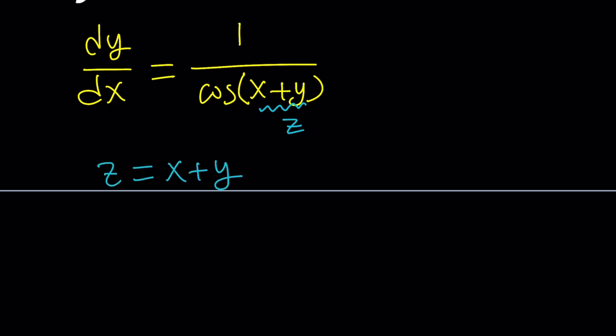Since y is a function of x — and x is, of course, a function of x — their sum is also a function of x. In other words, we can talk about dz over dx, which for simplicity's sake I'm going to call z prime. So let's go ahead and differentiate both sides.